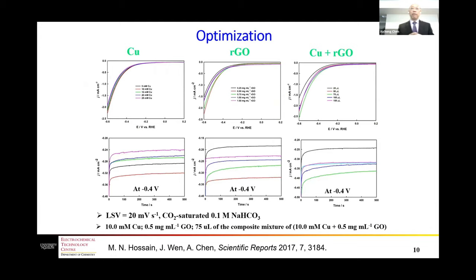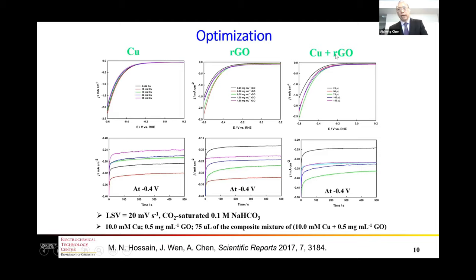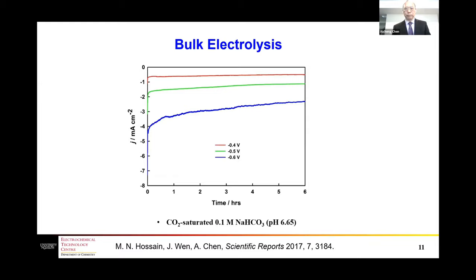We then optimize the nanoparticles. First we optimize the copper content by fixing the volume but changing the concentration. Then we optimize the amount of graphene oxide by changing that amount. We found the optimized condition, and under this condition we can achieve the highest activity for CO2 reduction.